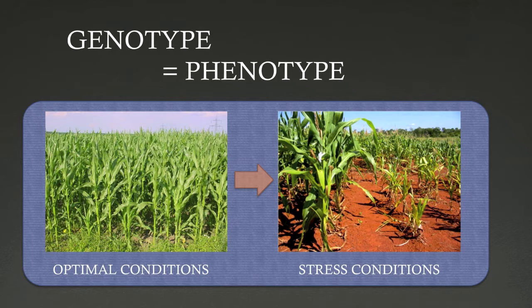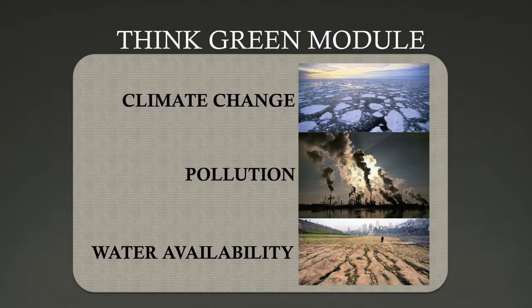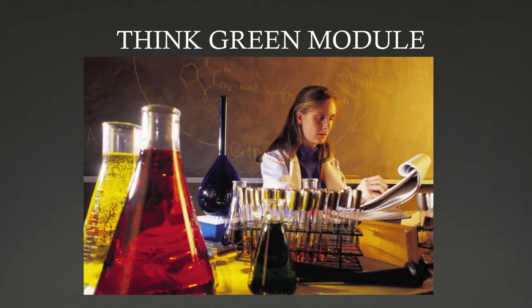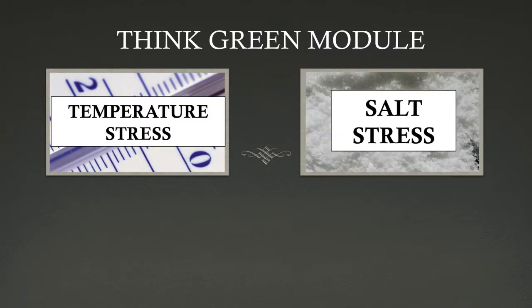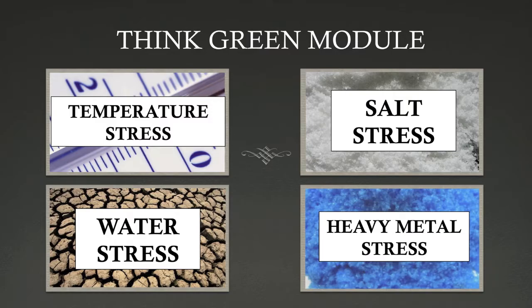Understanding the relationship between genotype, phenotype, and environment is critical to scientists attempting to develop new varieties of crops to combat the challenges of climate change, pollution, and water availability. Today, you will play the role of scientists in finding varieties of Arabidopsis that are both resistant and susceptible to four different kinds of environmental conditions including temperature stress, salt stress, water stress, and heavy metal contamination.